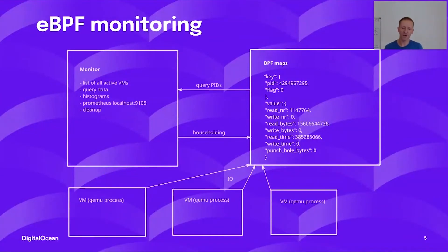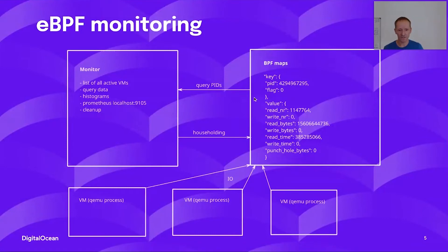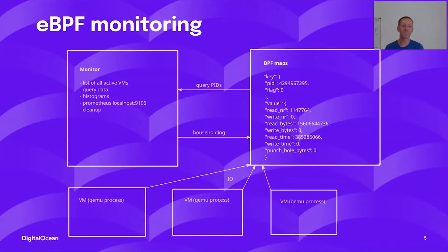At the bottom we have the VMs. As we have the IO path instrumented, whenever a VM does IO, we atomically increase the counters we are interested in — the counters visible in the BPF maps part — for read and write operations, for bandwidth and IO count, and other things. It's a simple hash map indexed by the process PID.